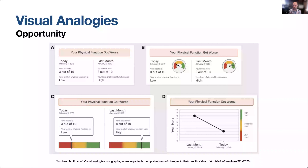When they looked at participants' ability to correctly comprehend what these panels were communicating, the one that scored the lowest was actually the line graph, with only 60% of participants accurately comprehending it. The highest was panel B — the visual analogy — and participants were able to comprehend the visual analogy significantly better than the text-only and line graph conditions.